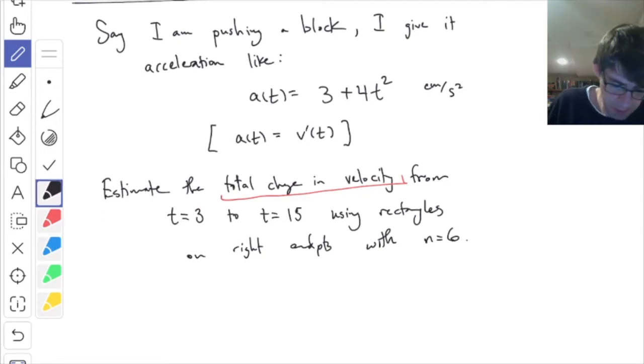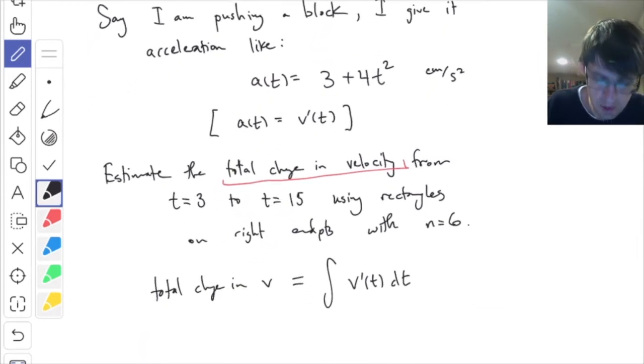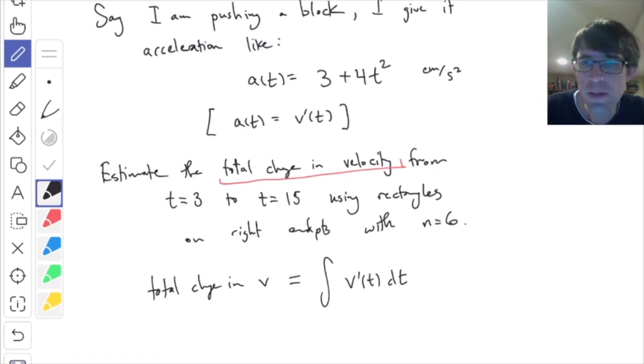The total change in v is equal to the integral of v prime of t dt. The total change of f of x would be the integral of f prime, so if I want the total change of v, the velocity, that is the integral of v prime. V prime is the acceleration. Integral from 3 to 15 of my acceleration, which is 3 plus 4t squared dt. We need to estimate that definite integral.